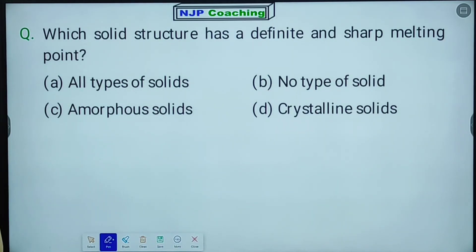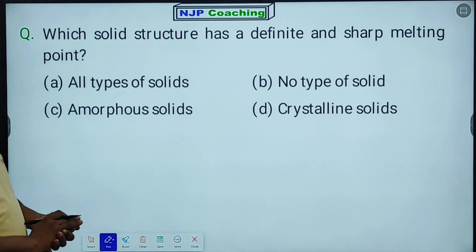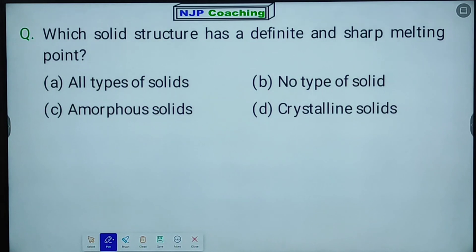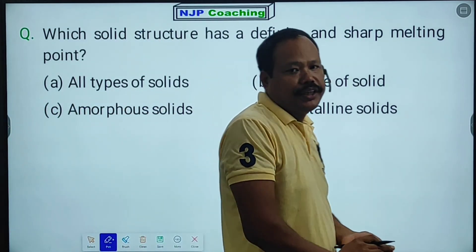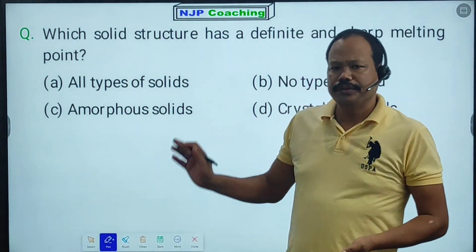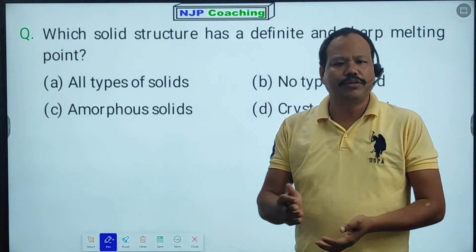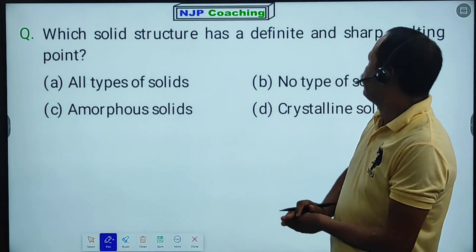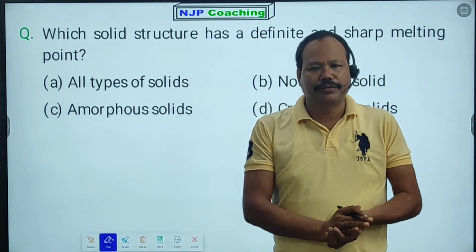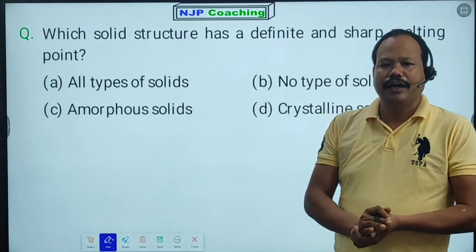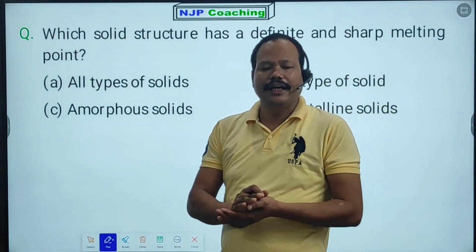Question: Which solid structure has a definite and sharp melting point? What kind of solid has a definite or sharp melting point? There are two types of solid: amorphous solid and crystalline solid.